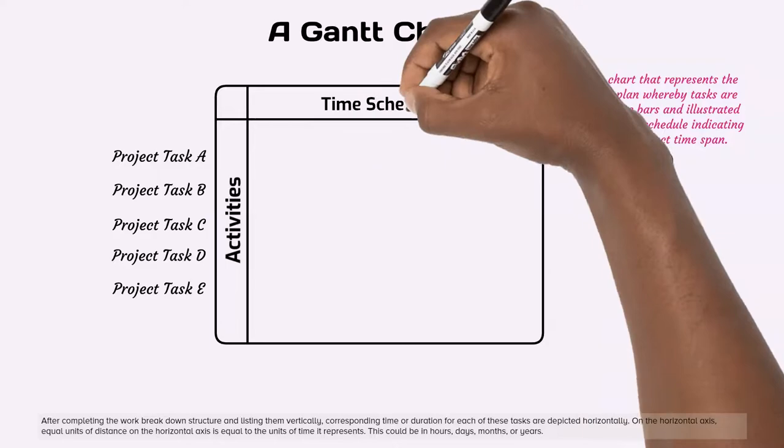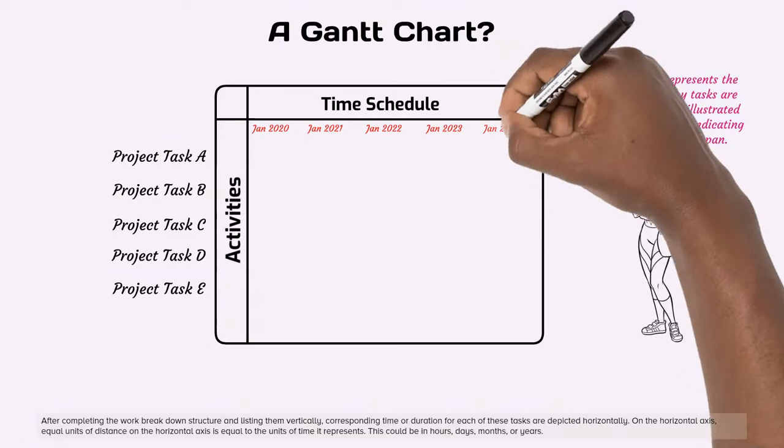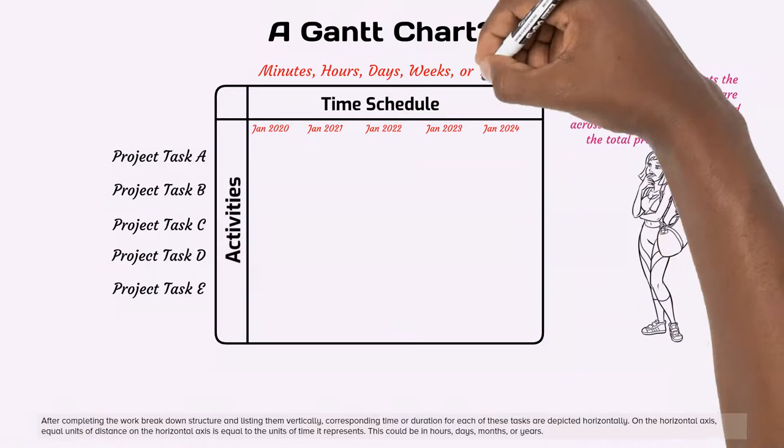On the horizontal axis, equal units of distance on the horizontal axis is equal to the units of time it represents. This could be in hours, days, months, or years.